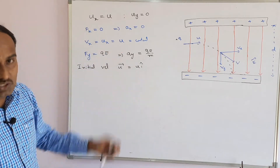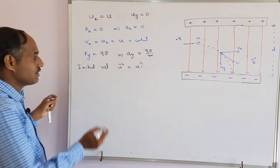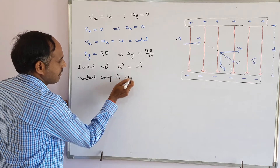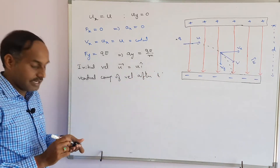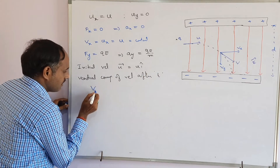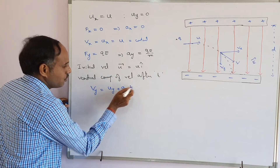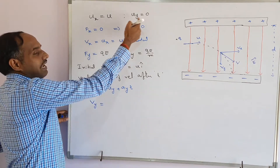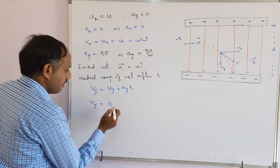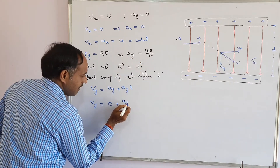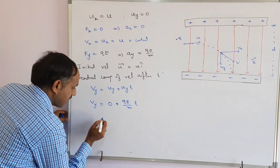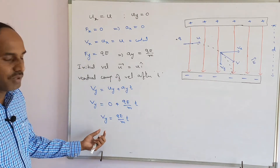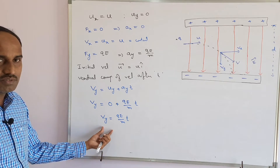While vx remains constant, vy changes. To find the vertical component of velocity after time t, I use the equation: vy = uy + ay·t. Here, uy = 0 (no initial vertical velocity), and ay = qE/m. Therefore, vy = (qE/m)·t is the vertical component of velocity after time t.